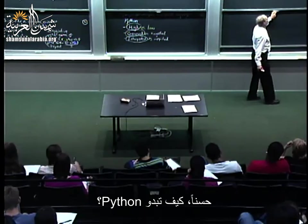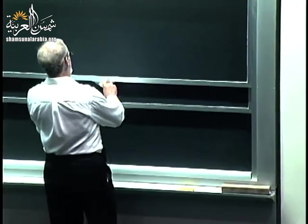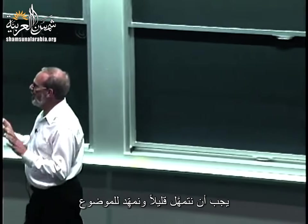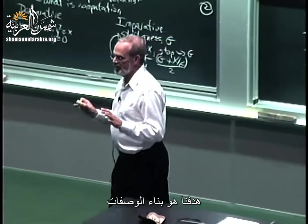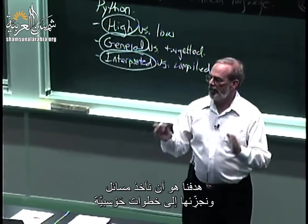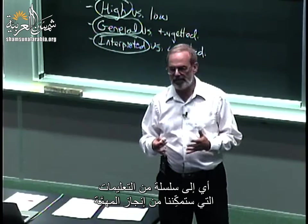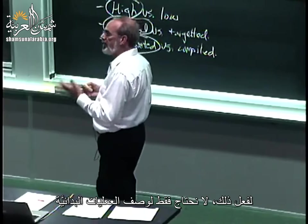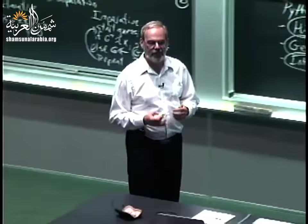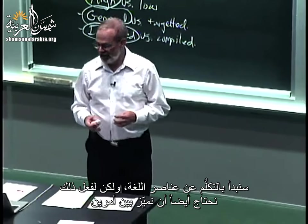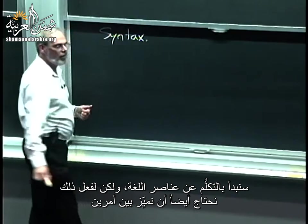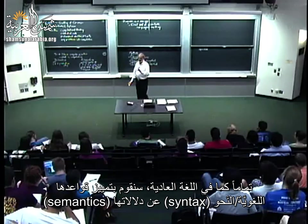So what does Python look like? Our goal is to build recipes — to take problems and break them down into computational steps, a sequence of instructions that capture that process. To do that, we need to describe not only what the primitives are but how we capture things legally in the language. We need to separate out syntax versus semantics. Syntax basically says: what are the legal expressions in this language?